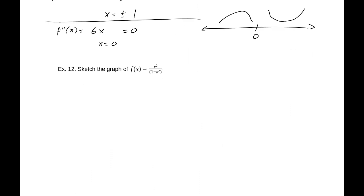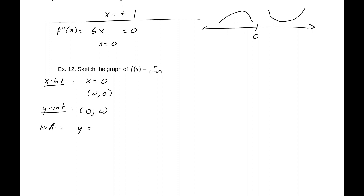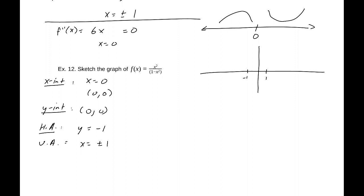Number 12: sketch the graph of f(x) = x²/(1 - x²). The x-intercept is at x = 0, giving the point (0, 0), which is also the y-intercept. We have a horizontal asymptote of y = -1, based on the two x² terms. As the function goes in both directions, it approaches -1. We also have vertical asymptotes at x = ±1.